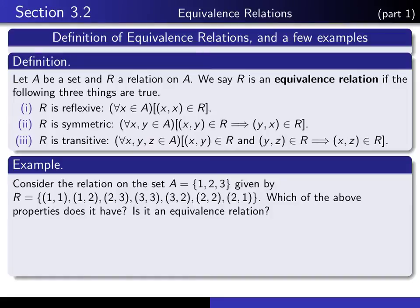Let's look at a particular example of a relation and see which of these three properties it has. It's a relation on a given set. Is this a reflexive relation? Is it necessarily true that for any X in A, (X, X) is in the relation? A consists of 1, 2, 3. (1,1) is in there, (2,2) is in there, and (3,3) is in there. Therefore, it is a reflexive relation.